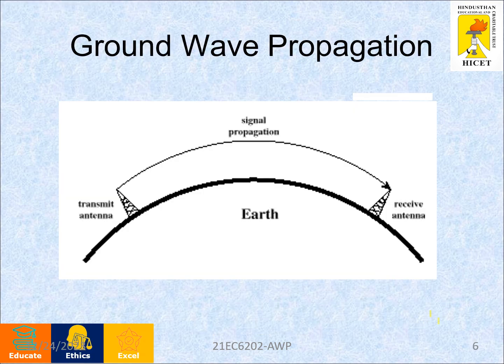Ground wave propagation: let us assume this is a transmitting antenna and this one is a receiving antenna. The signals are propagated near to the earth's surface, which is called ground wave propagation. The radio waves follow the earth's surface. This ground wave propagation is suitable for short range communication, for example AM broadcast during the day. It works best at low frequencies, for example at 80 or 160 meter bands.